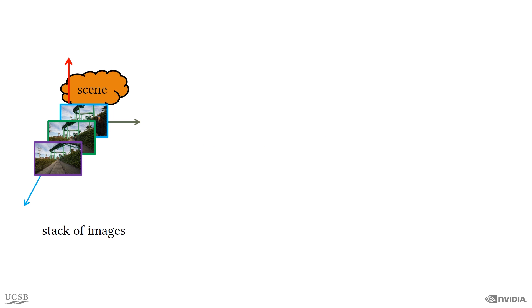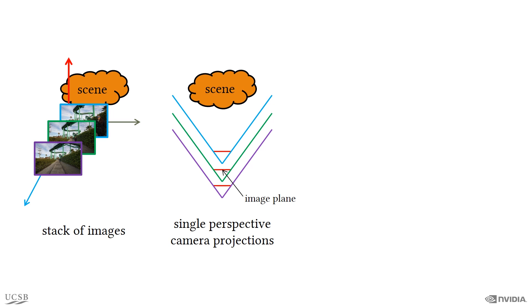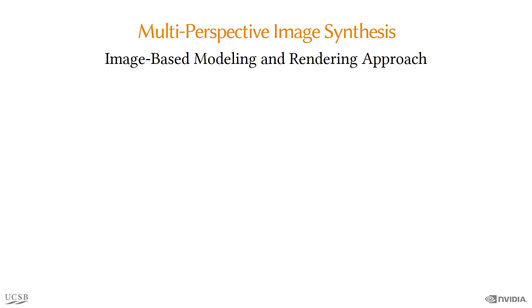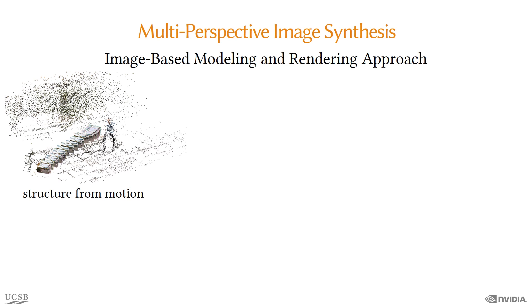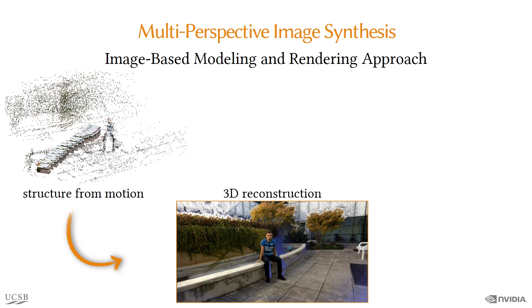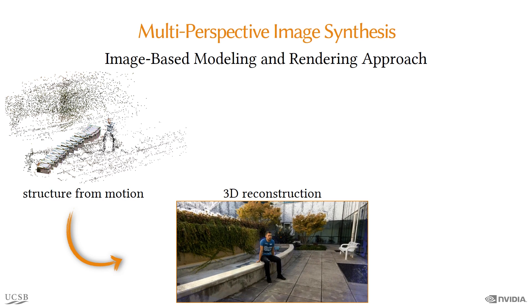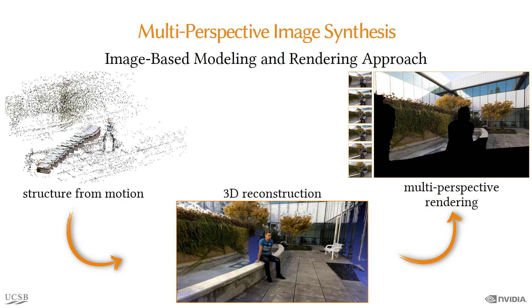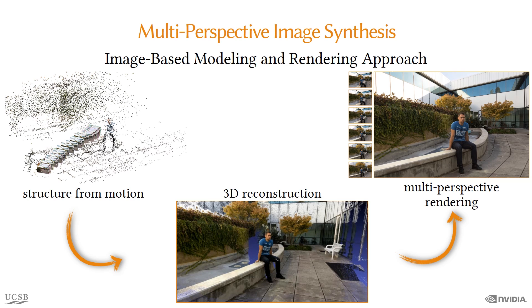A stack of images captured at different depths from the scene represent single perspective projections of the scene. Our approach combines these single perspective images and synthesizes a multi-perspective image. We propose an image-based modeling and rendering approach to synthesize multi-perspective images. First, we estimate camera positions using standard structure from motion software. Next, we estimate dense depth maps for each input image using our proposed multi-view stereo approach, which better handles images captured by moving into the scene. Finally, we propose a novel approach that uses the captured images along with the dense depth maps to synthesize images under multi-perspective camera projections. More details about our algorithm are in the paper.